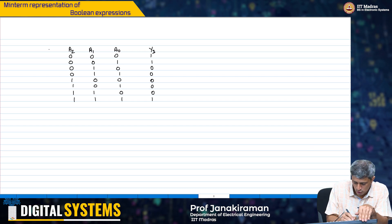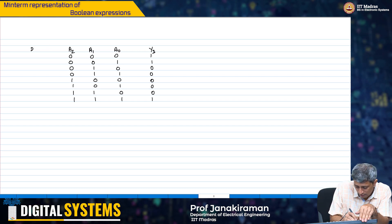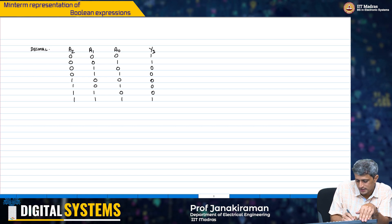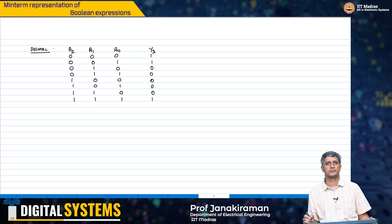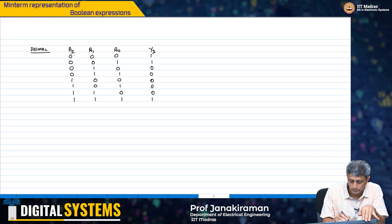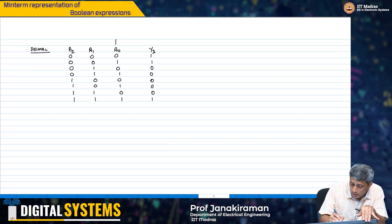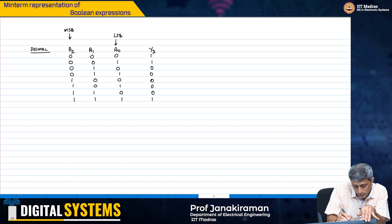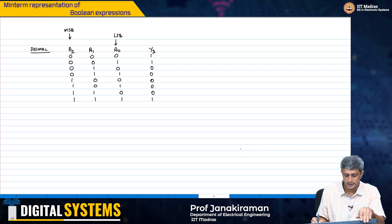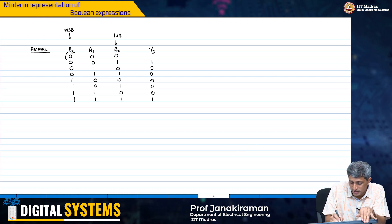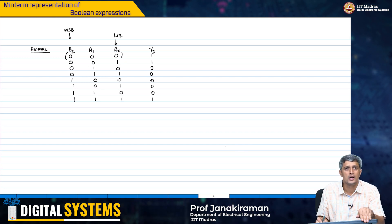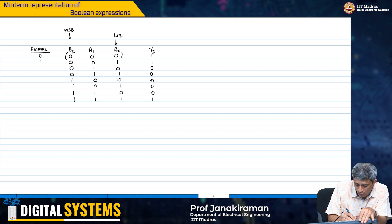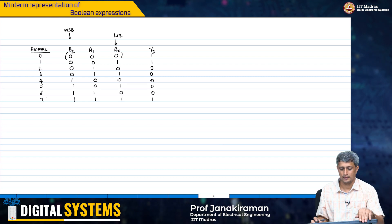So, let me also represent what is the decimal value of this thing. If I take a2, a1, a0, assume that a0 is my LSB. This is my MSB. Then, this representation 0, 0, 0, 0, 0, 1, etc., corresponds to the decimal value 0, 1, 2, 3, 4, 5, 6, and 7.